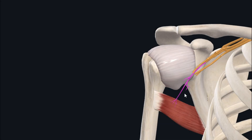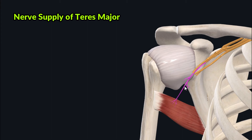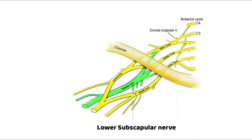In terms of nerve supply, the teres major muscle is supplied by the lower subscapular nerve. The lower subscapular nerve originates from the posterior cord of the brachial plexus.